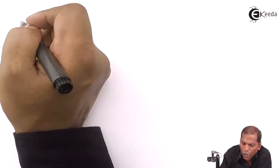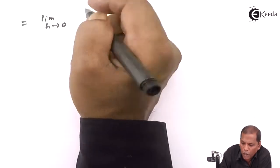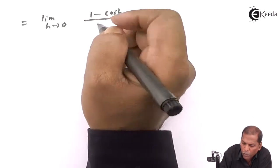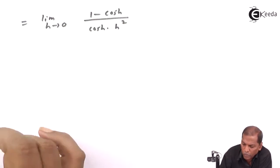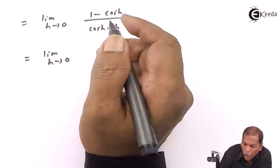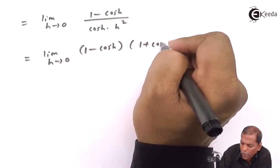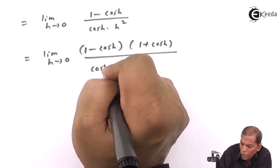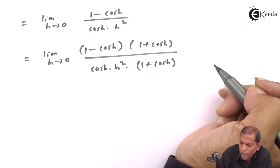So we have limit h tends to 0 of (1 - cos h) upon cos h times h². Now we rationalize the numerator by multiplying by (1 + cos h)/(1 + cos h), giving us (1 - cos h)(1 + cos h) upon cos h times h² times (1 + cos h).